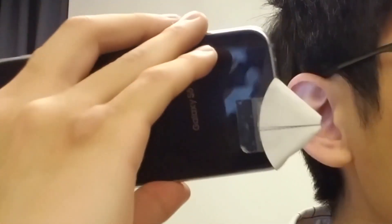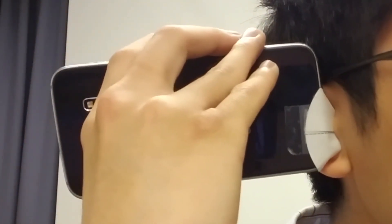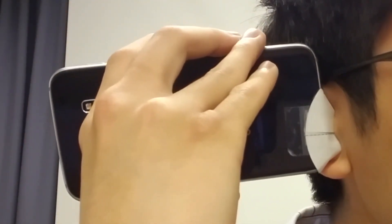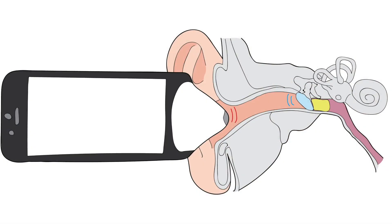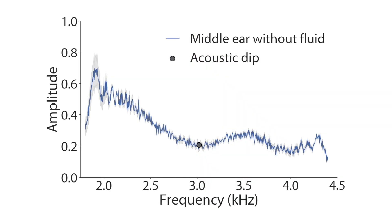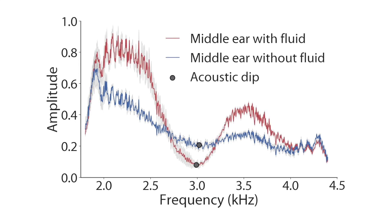The way that it works is that our smartphone sends a soft acoustic chirp into the ear canal. Depending on whether there is fluid, the eardrum will vibrate differently. When there is no fluid, the eardrum will resonate well at a wide range of frequencies, resulting in a soft echo. But when there is fluid, the eardrum becomes stiff and it restricts the vibrational capacity.